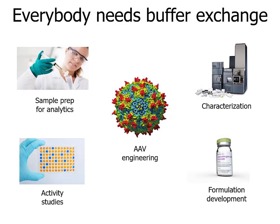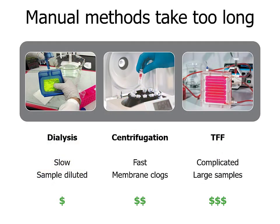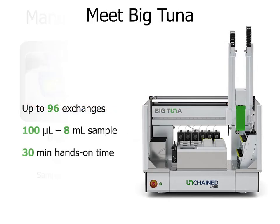You can't get away from doing buffer exchange. From protein therapeutics development to AAV engineering, it is everywhere — after the production from cell line and before going to analytics and selecting the right formulation. Dialysis, centrifugation, and TFF methods are great techniques if you only have a couple of samples to work with, but if you have many samples or buffer types, none of these methods are ideal. Originally created to help break through the bottlenecks of protein manual buffer exchange, we find Big Tuna works just as well as an automated, versatile buffer exchange system for AAV and other virus-like particles.